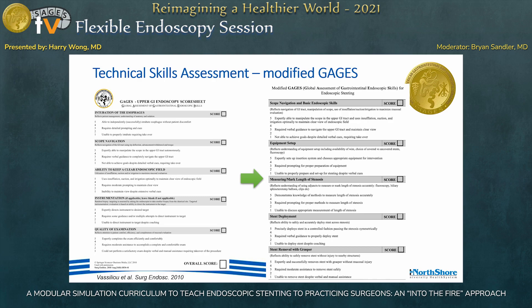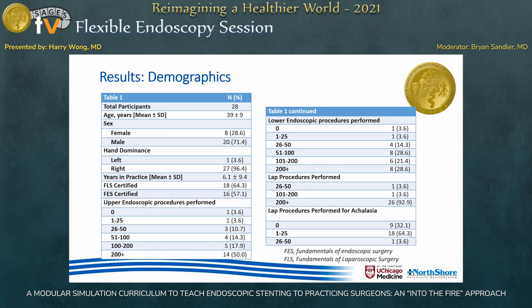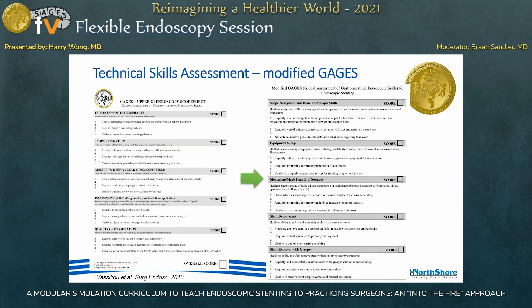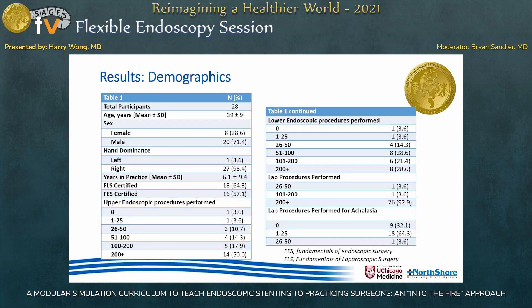In our most recent course, we used the well-validated GAGES assessment tool, made specific to endoscopic stenting, including items such as measuring and marking the length of stenosis, stent deployment, and removal. Looking at the results, we had a total of 28 practicing surgeons who participated in the curriculum with varied backgrounds and experiences, with a mean practice of six years.